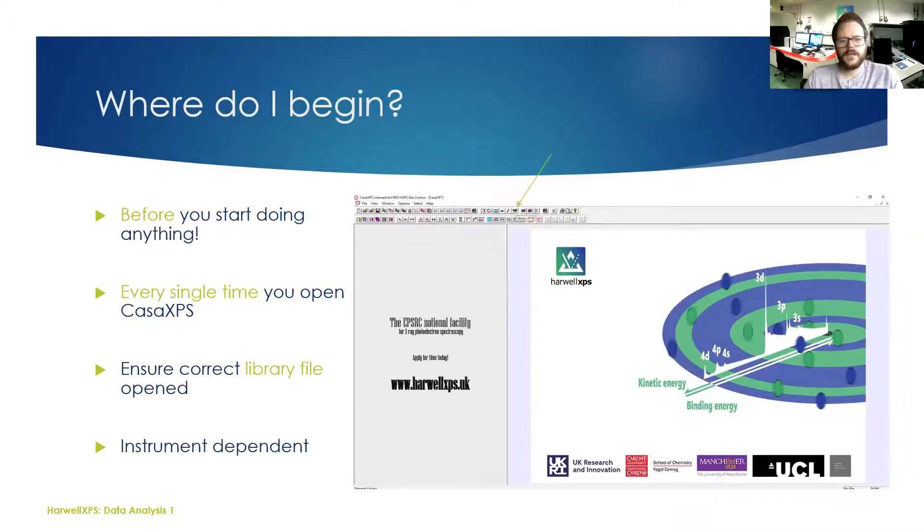This is a very important step and people can often overlook it. Sometimes it can slip your mind, but it is very important that you load up the correct library file. Different instruments will have different sensitivity factors, and there are library files associated with the different instruments that will load up your calibration values. If you're just getting data from someone, check with the experimental officer which library file you need.